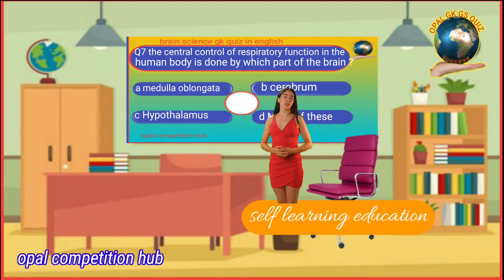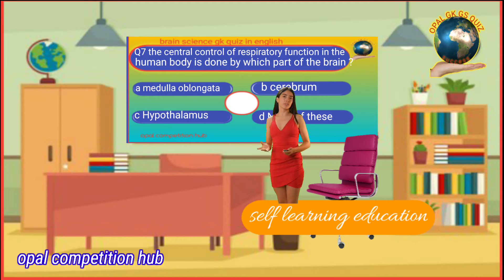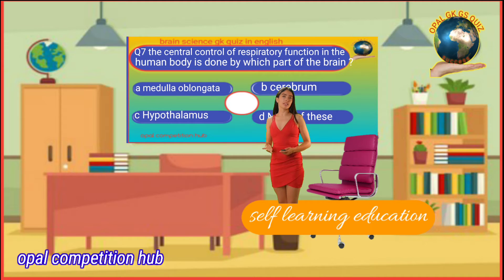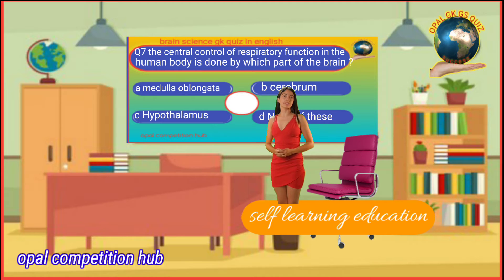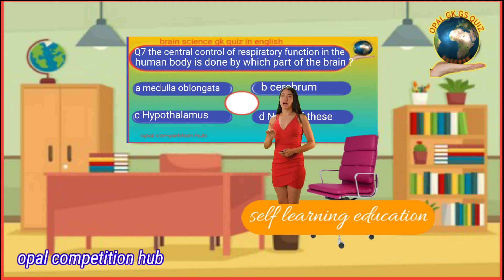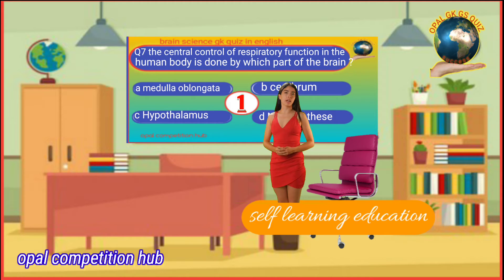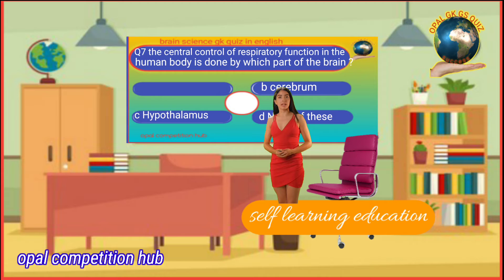Question number 7: The central control of respiratory function in the human body is done by which part of the brain? Option A: Medulla Oblongata. Option B: Cerebrum. Option C: Hypothalamus. Option D: None of these. Your time starts now. Your answer will be Option A: Medulla Oblongata.